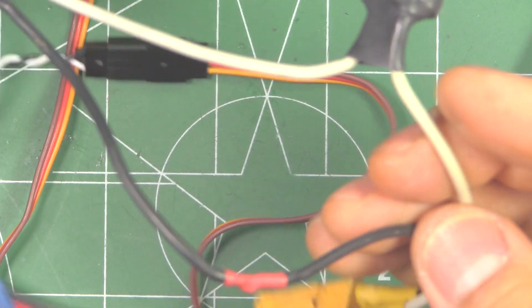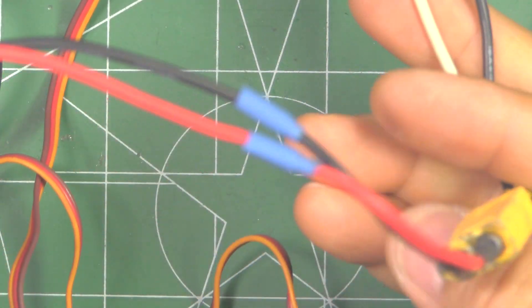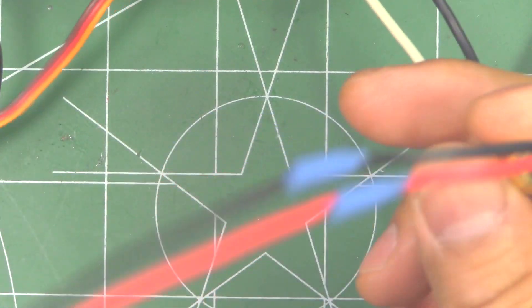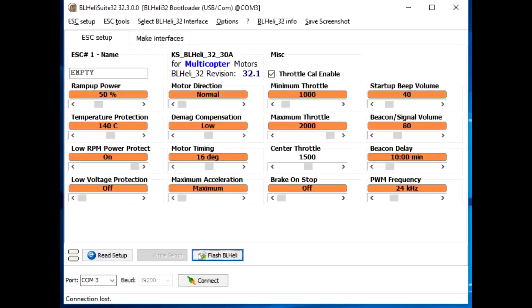Okay, just hook that up. Connect to the ESC and we'll hook this up to the computer. Alright, so here we have the BLHeli Suite 32. This one you use to communicate with the BLHeli 32 compatible ESCs. It's basically the utility that you use to change all the settings or flash the latest firmware.